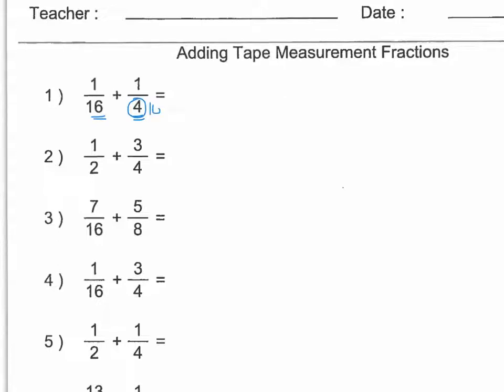So we want to rewrite that 4 as a 16, and if we look up on our ruler, we know that 1 quarter is the same as 4 sixteenths. So that's just like multiplying the top and the bottom of the fraction each by 4. So what we have now is 1 sixteenth plus 4 sixteenths.